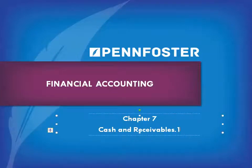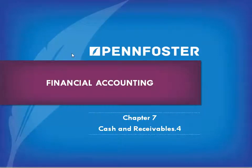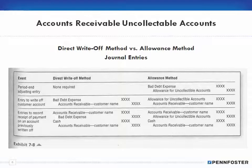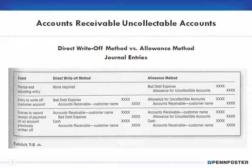Welcome back students taking financial accounting. In this series of videos for chapter 7, we're working on the theory involving cash and receivables. This is the fourth video. In the last two videos we talked about the direct write-off method versus the allowance method. This video is going to be relatively short — I'm just going to take a quick look at the differences between the journal entries for the two methods.